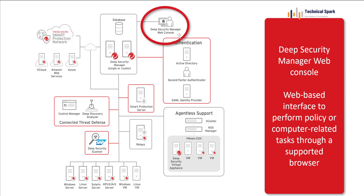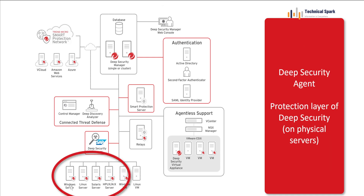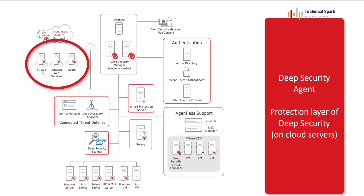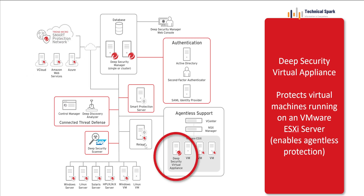The Deep Security Manager console is where all administrator-level tasks are performed — it's a GUI-based console accessible from a browser. You can install the Deep Security agent on servers to protect them, including virtual servers. The Deep Security agent is compatible with all server types as well as servers in clouds, including vCloud, Amazon AWS, and Azure.